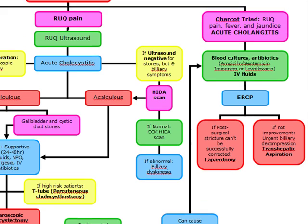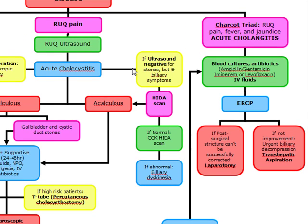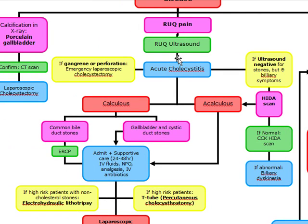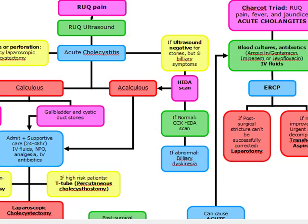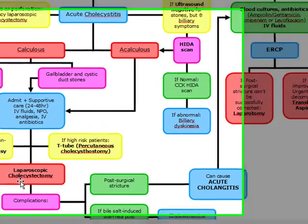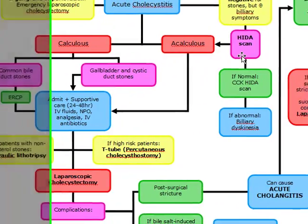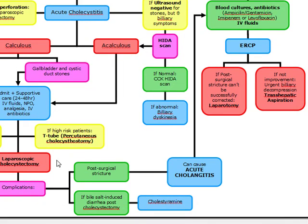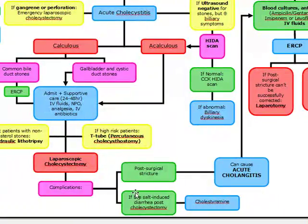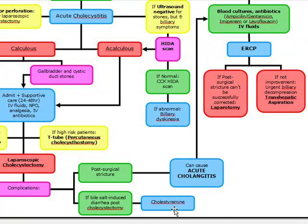Quick recap on gallbladder disease: right upper quadrant constant pain — do a right upper quadrant ultrasound. You'll diagnose acute cholecystitis by finding gallstones, a thickened gallbladder, and pericholecystic fluid. If there's gangrene or perforation, do an emergency cholecystectomy. Otherwise, stabilize the patient and wait 6 to 12 weeks before doing a laparoscopic cholecystectomy. If the ultrasound is negative, do a HIDA scan. After cholecystectomy, a complication can be a post-surgical stricture or bile salt-induced diarrhea — treat bile salt-induced diarrhea with cholestyramine.